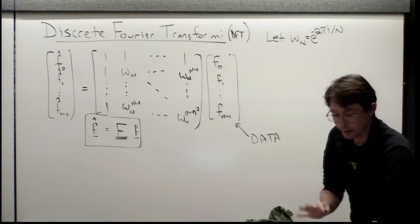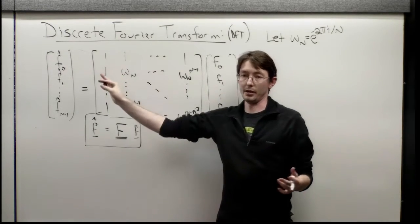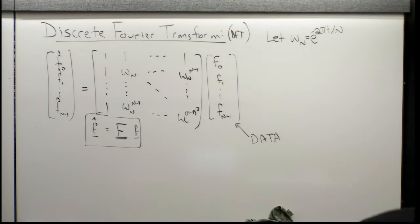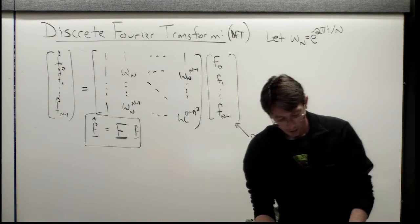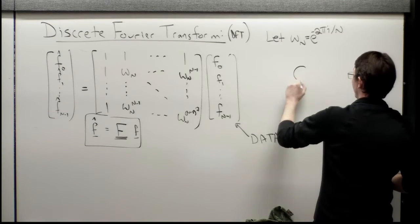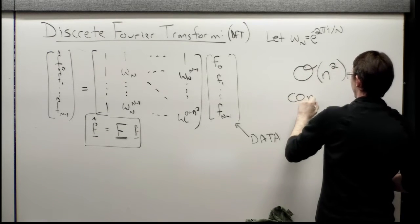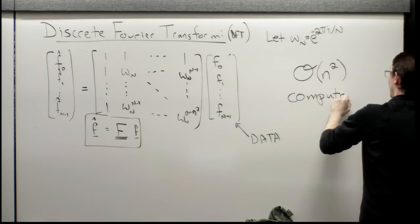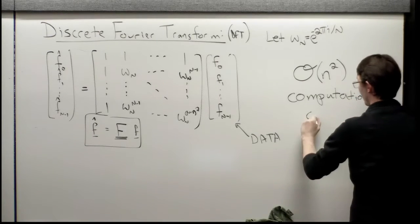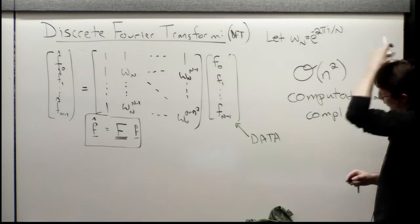So this is our F matrix and our F data. If I have a vector of data times this matrix, that gives me my vector of F hats. This is the discrete Fourier transform matrix. It's a relatively simple thing to make this matrix and to multiply it by a vector of data.